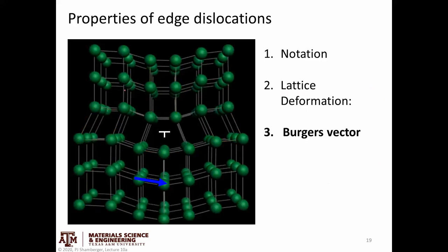For the Burgers vector of an edge dislocation: let's define this as my start, and because the vector is going into the board, the right-hand rule tells me to go clockwise. So I go one, two, three, four steps to the right, then down one, two, three, four steps, then to the left one, two, three, four, and up one, two, three, four. This is my finish. Applying right-hand start-to-finish notation, the Burgers vector is pointing in this direction and is one unit cell edge length long. The vector itself has the same magnitude and direction regardless of where I illustrate it on the image.